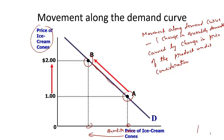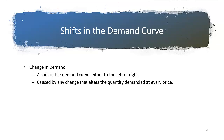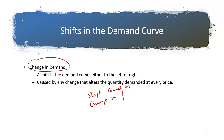This is different from a shift. Change in demand — also called a shift — is caused by factors other than the price of the commodity. That means it is a shift caused by a change in factors other than price.